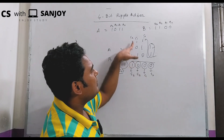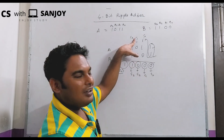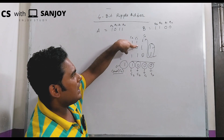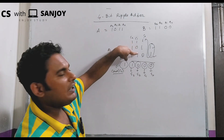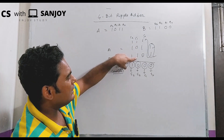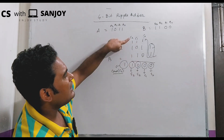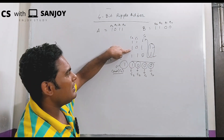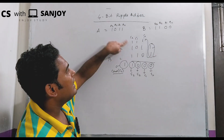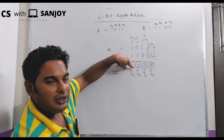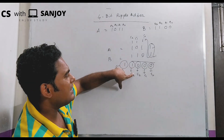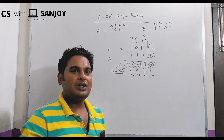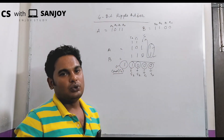Then carry 1, C1. Next is A2, B2, add, then carry C2. Then A3, B3, add, sum, carry C3, and Cout.